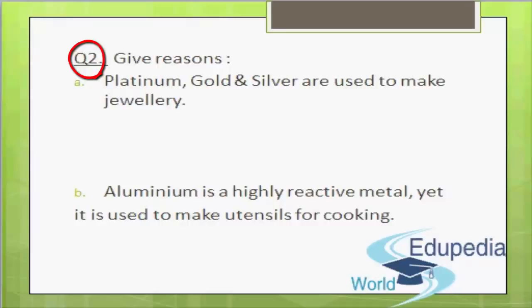They do not react with oxygen even at high temperatures. They have a shining surface, hence they are used to make jewelry. The second part: aluminum is a highly reactive metal, yet it is used to make utensils for cooking. When aluminum is exposed to air, a thin protective layer of aluminum oxide is formed on its surface. Although there is initial damage, this layer protects the aluminum underneath from further damage. Hence aluminum is used to make utensils for cooking.